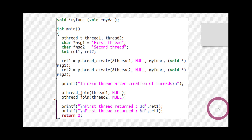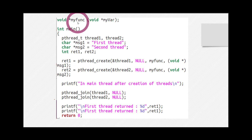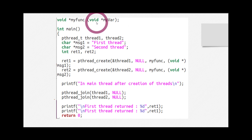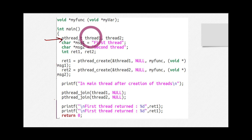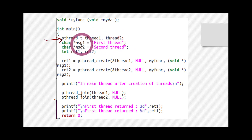Let's look at a complete program which creates two threads and passes a variable to them. The function we will use is myFUNC. As discussed, the return type is void pointer and the data type of its single parameter is also void pointer, so we are following the rules. We create two thread IDs named thread_one and thread_two, and two char pointer strings: 'first thread' and 'second thread'.